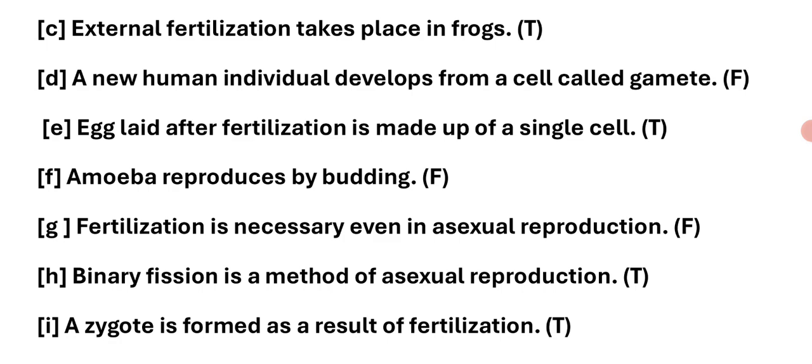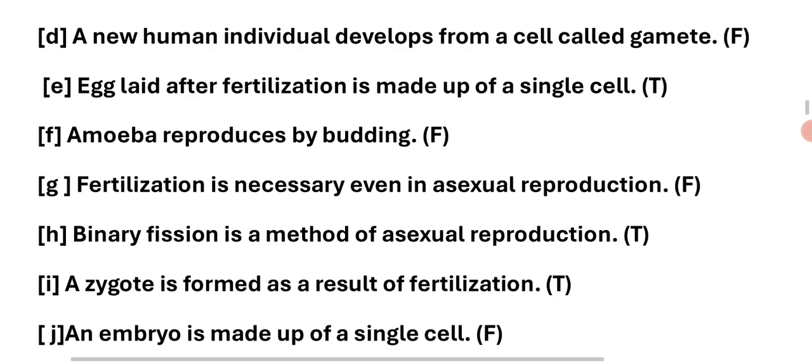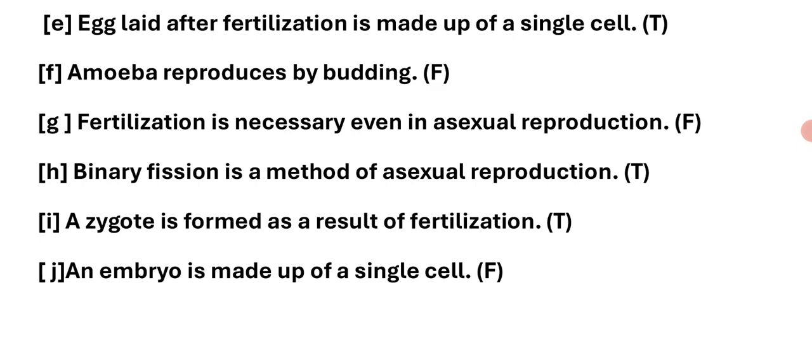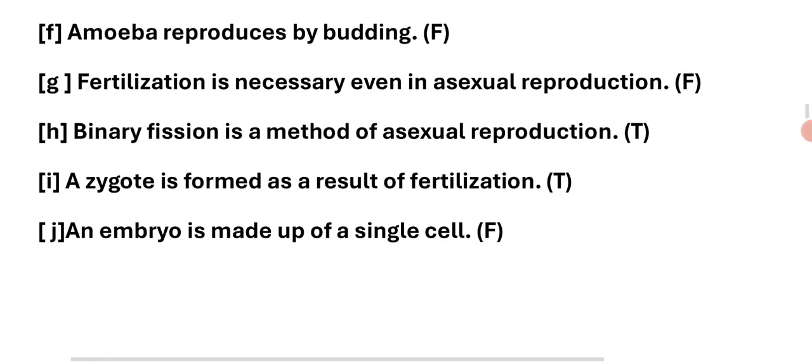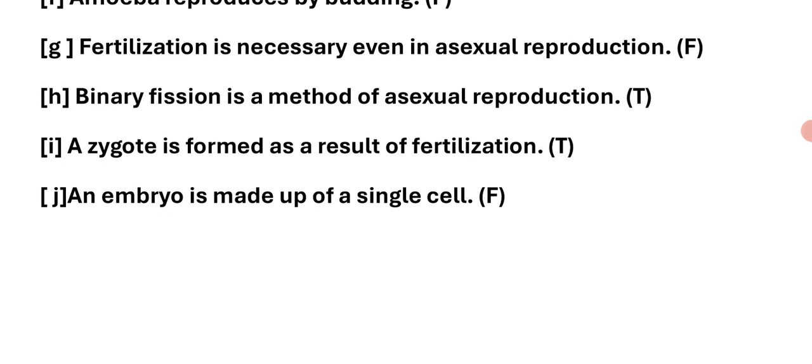Statement 5: An egg laid after fertilization is made up of a single cell — true. Statement 6: Amoeba reproduces by budding — false. Statement 7: Fertilization is necessary even in asexual reproduction — false. Statement 8: Binary fission is a method of asexual reproduction — true. Statement 9: A zygote is formed as a result of fertilization — true. Statement 10: An embryo is made up of a single cell — false.